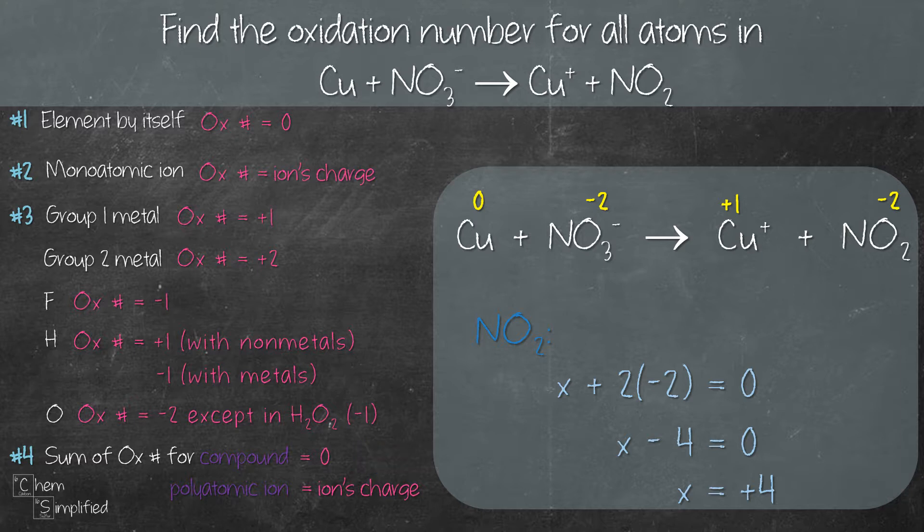So we solve that for X and we get X equals plus four, which means the oxidation number for nitrogen in NO2 is plus four.